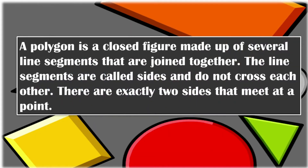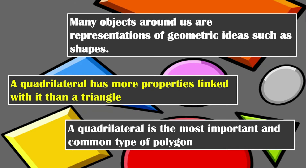A polygon is a closed figure made up of several line segments that are joined together. The line segments are called sides and do not cross each other. There are exactly two sides that meet at a point. A triangle is also a polygon, but it has the least number of sides — only three sides. Many objects around us are representations of geometric ideas such as shapes.